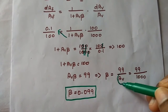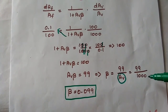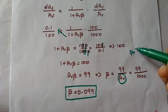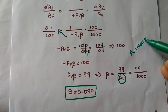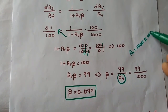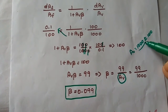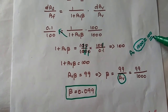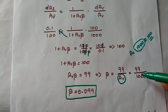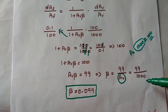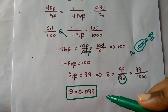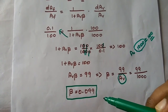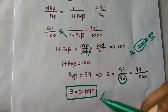The value of AV is 1000 (the nominal open loop voltage gain). Substituting: β = 99/1000 = 0.099. This is the required feedback factor (reverse transmission factor).